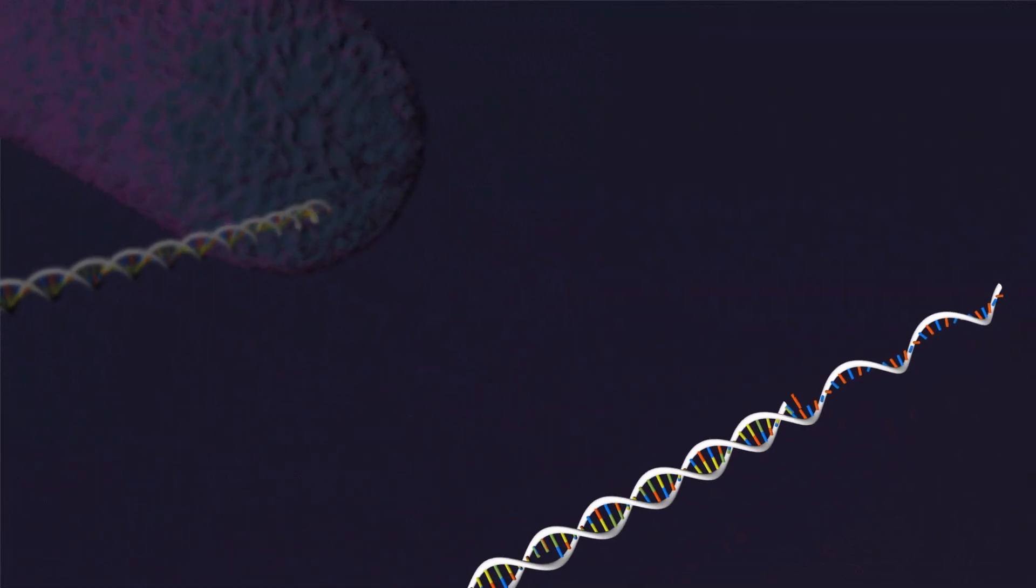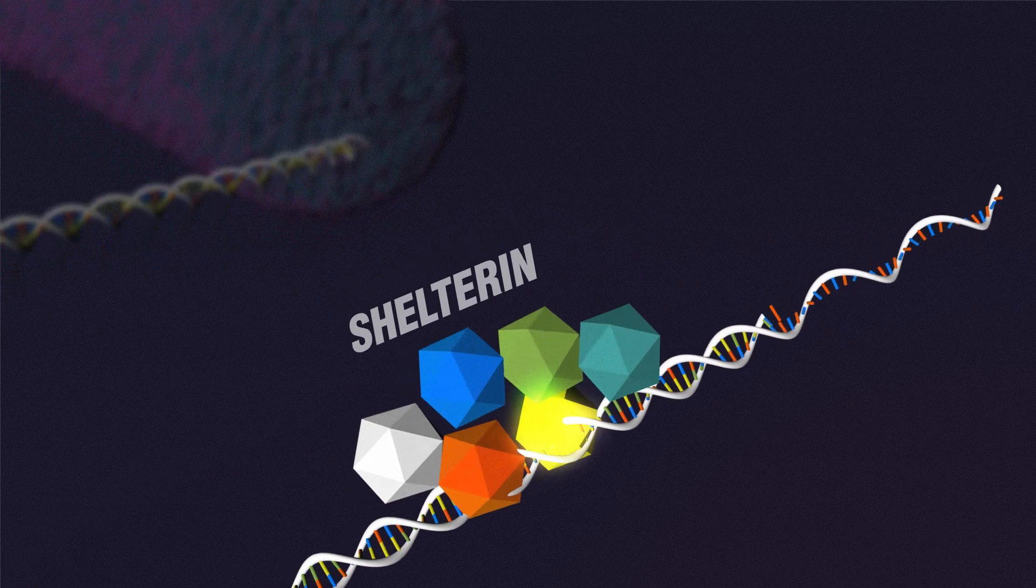The telomeres are protected by a protein shield called shelterin, which is essential for its proper functioning as a protective structure of the chromosome.